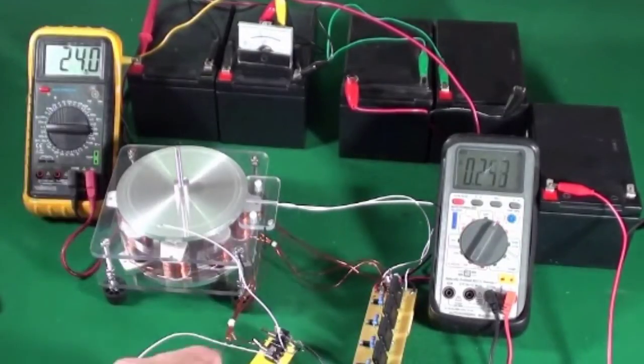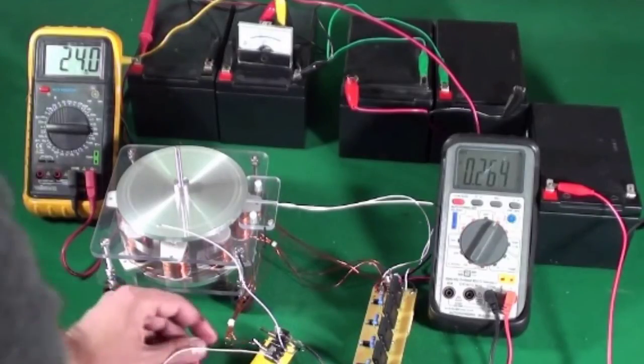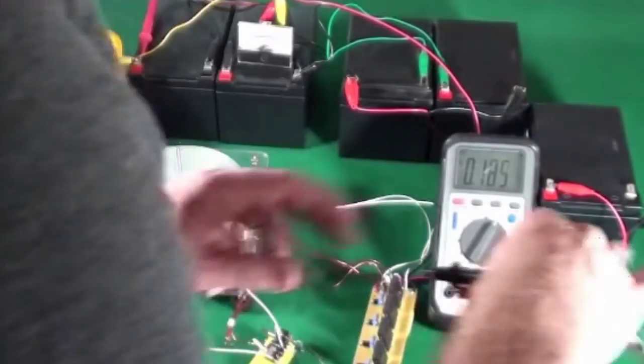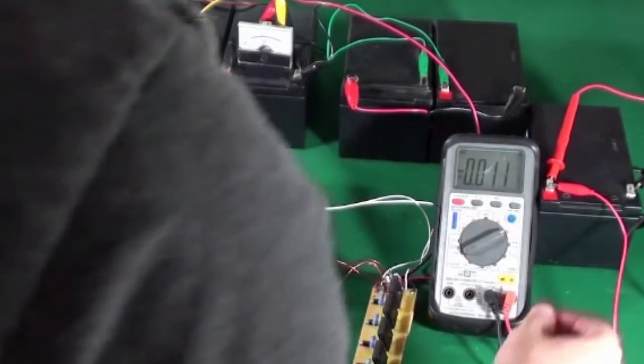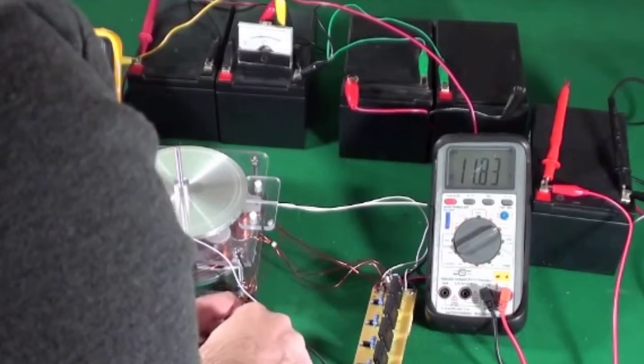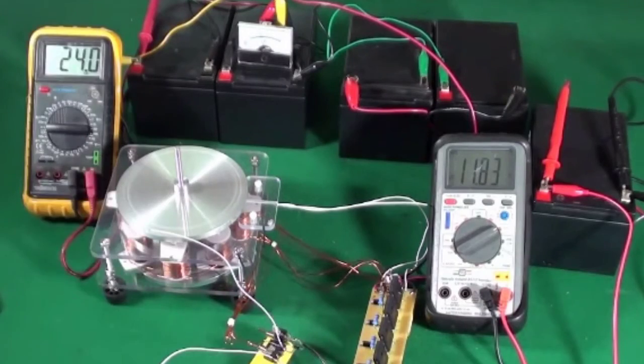So the cap receives the pulses and increases the voltage on the DC side. Back to AC. Oh my god, it speeds up. Drops the amps. Speeds up. Battery charges.